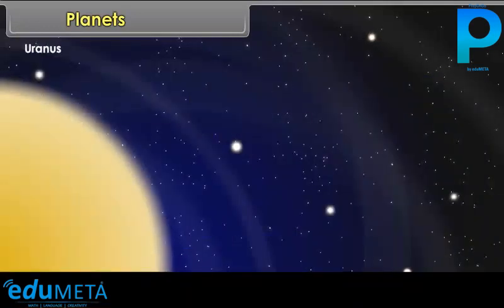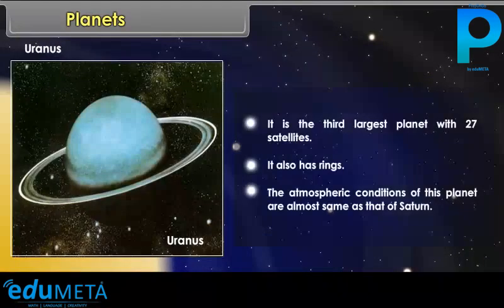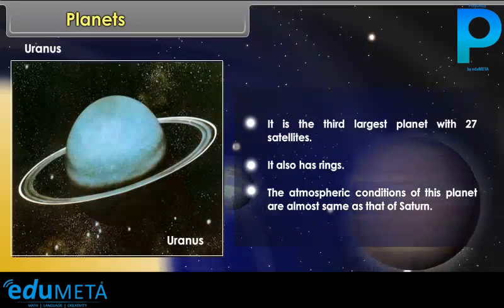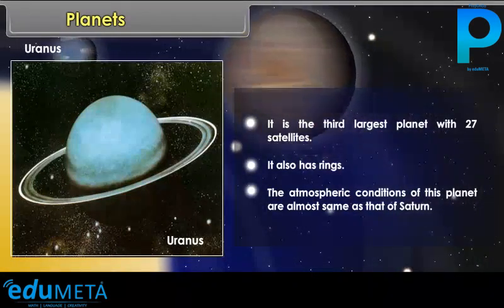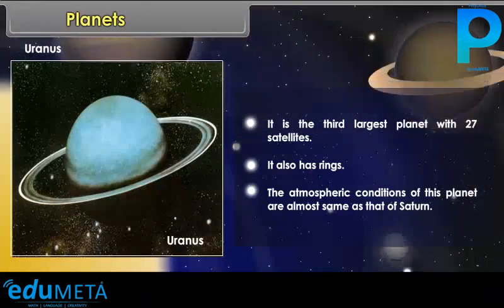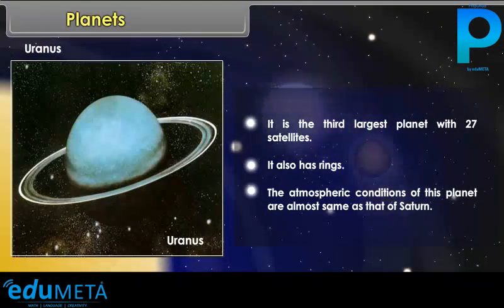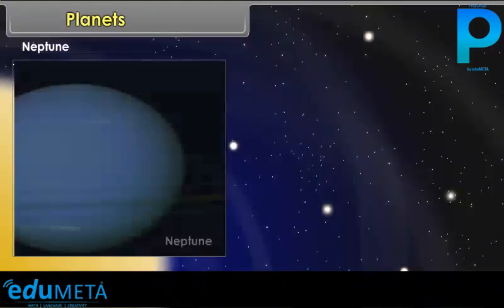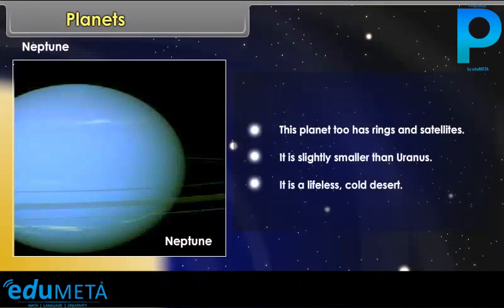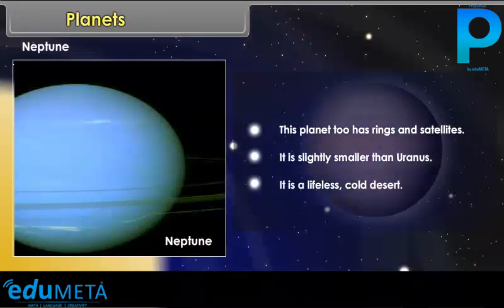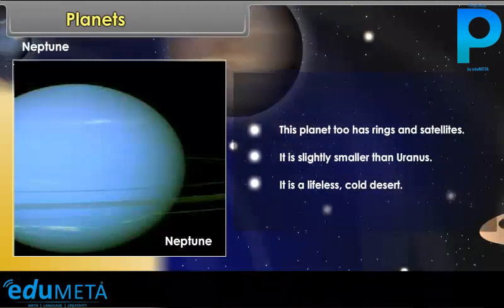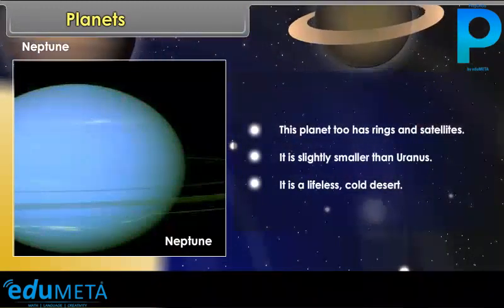The atmospheric conditions of Uranus are almost the same as that of Saturn. Neptune also has rings and satellites. It is slightly smaller than Uranus and is a lifeless, cold desert.